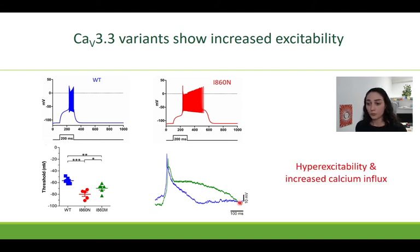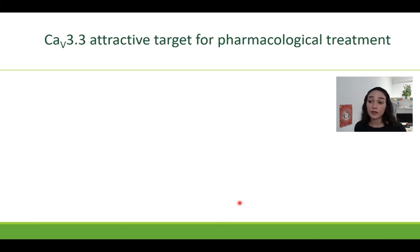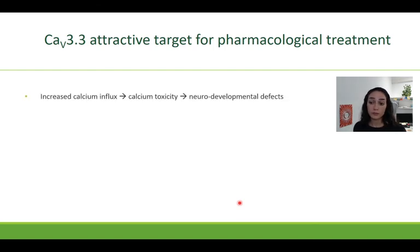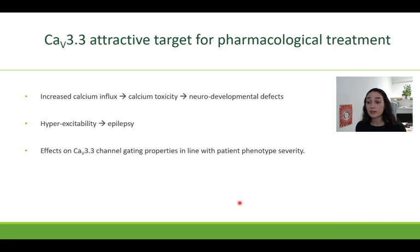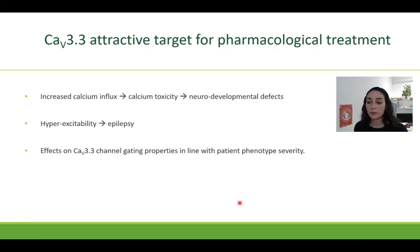To summarize, we found four gain-of-function mutants in the activation gate of Cav3.3 that result in an increased calcium influx, which could then lead to calcium toxicity, explaining the neurodevelopmental defects. We also saw proof for hyperexcitability, which explains the seizures. Additionally, the level of severity of each mutant on a biophysical level was in line with the patient phenotype severity.